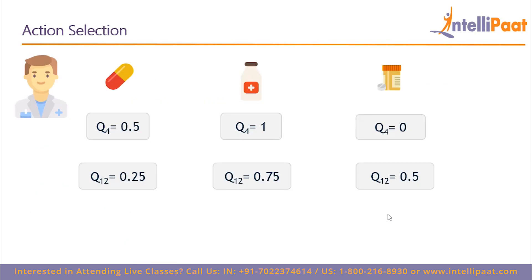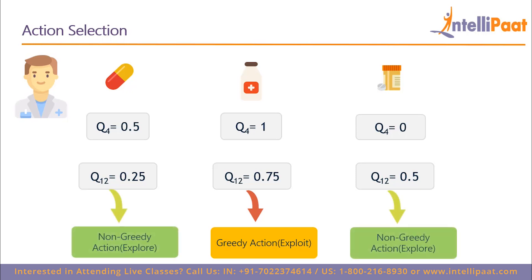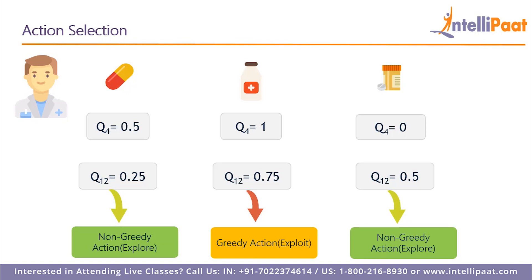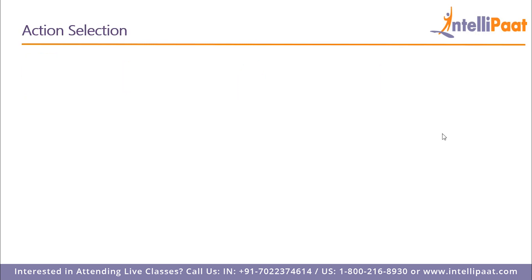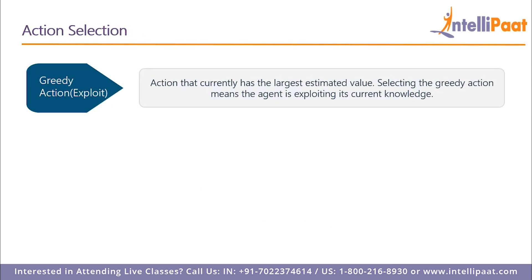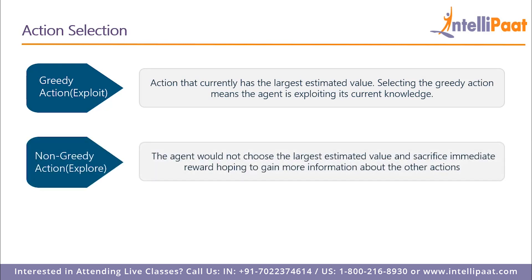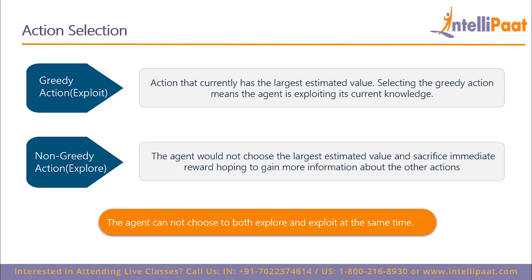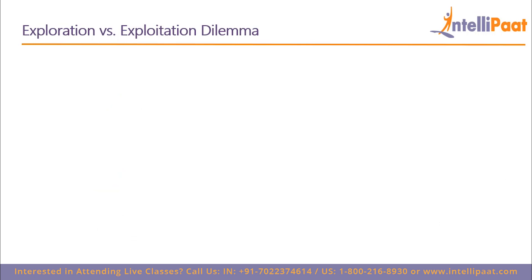Once we have action value estimates, the doctor has two options: choose the medicine with the highest action value, called the greedy action, which exploits current knowledge; or choose one of the other medicines to get a more accurate estimate — called selecting the non-greedy action, or exploring. An agent can only select one action at a time, either greedy or non-greedy. This brings us to the exploration versus exploitation dilemma in reinforcement learning.